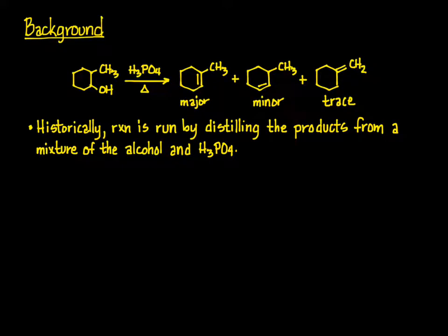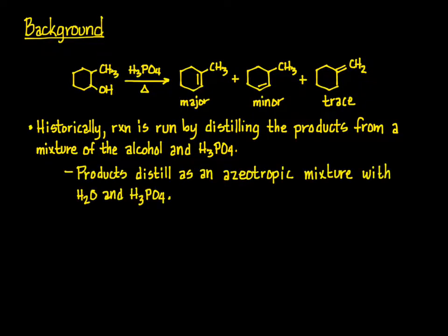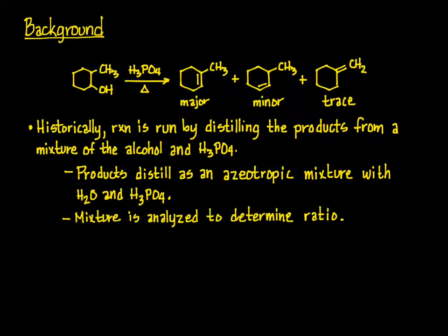The dehydration of an alcohol has long been a common experiment in organic chemistry labs. The reagents are inexpensive, the reaction times are relatively short, and a quick gas chromatographic analysis can show how these reactions follow Zaitsev's rule. The dehydration of 2-methylcyclohexanol is a particularly good starting material since it presents the possibility of some carbocation rearrangement. Also, the products are easily distilled out of the reaction as an azeotrope that can be quickly purified and analyzed by GLC.